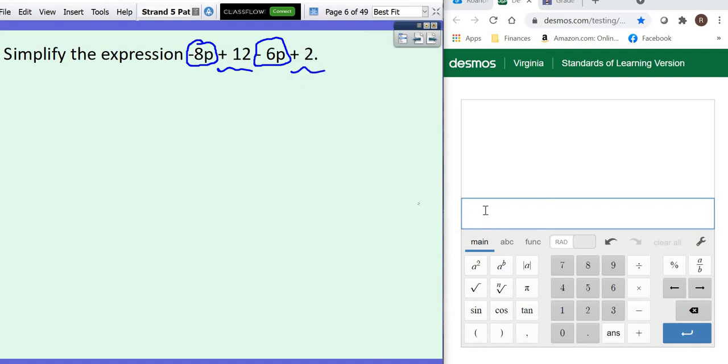So I think what I'm going to do is I'm going to go ahead and put the negative 8 in my calculator and the negative 6. And that gives me negative 14p. Then I'm going to put my numbers together.